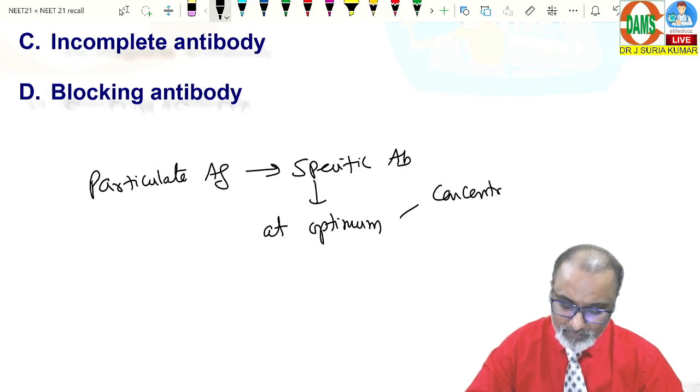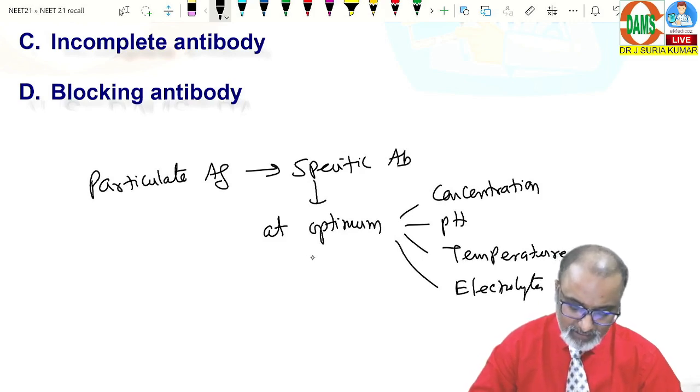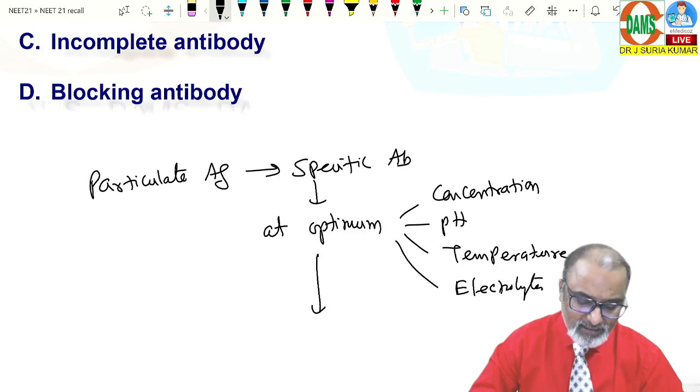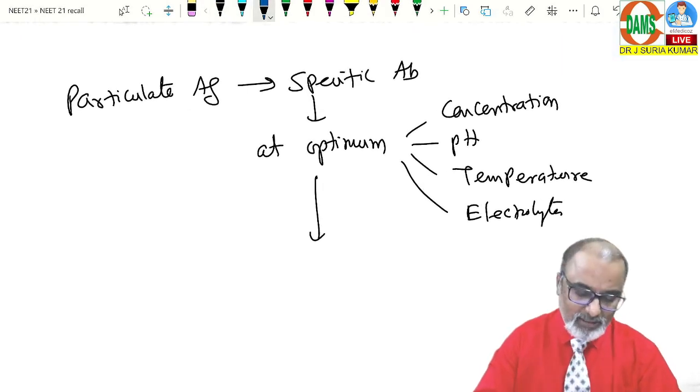Optimum concentration, optimum pH, optimum temperature, and optimum in the presence of electrolytes. And they produce an insoluble deposit, end product is called, insoluble deposit is called agglutination.